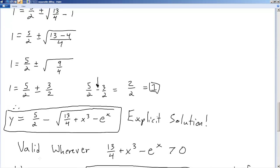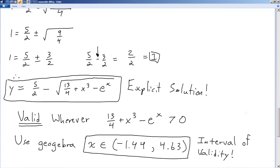And this is going to be valid wherever 13 over 4 plus x to the 3rd minus e to the x is greater than 0. You can do this in a variety of ways. You can do it with your handheld calculator. I use GeoGebra. You can type it into Wolfram Alpha, and it will give you the interval. I use GeoGebra, and I got this interval. That's our interval of validity. Anywhere that x is between negative 1.44 to 4.63. That's your interval.